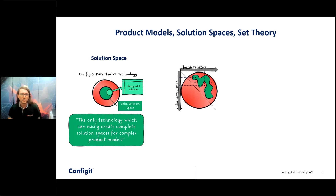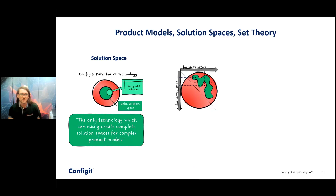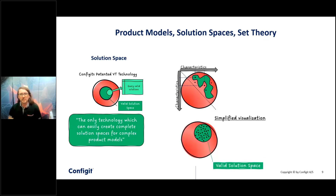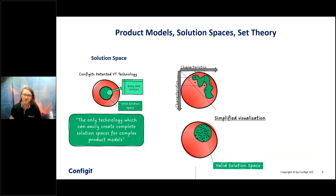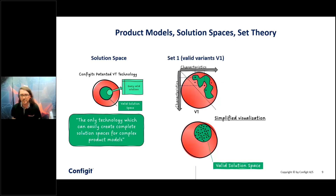We can then query certain characteristics and get results as a table or data set from the solution space. For example, for a car: what are the possible combinations between different engines, car shapes, and assistance systems? Simplified, the red circle represents theoretically possible combinations, and the green circle is the valid solution space — what you can build and sell. The black dots indicate all the different variants in that space. This is version one, or set one, of possible combinations.